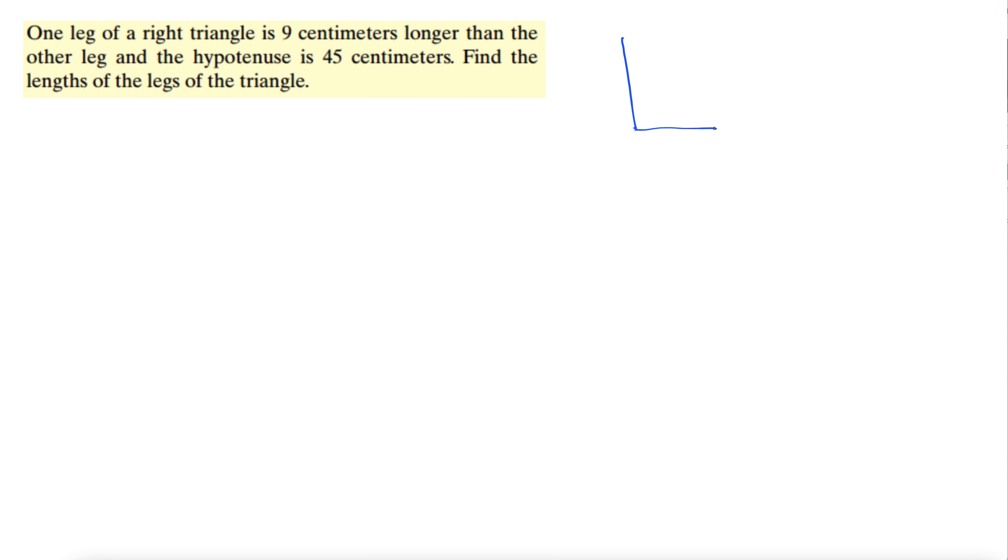Well, it tells us for any right triangle, a, b, and c, that a squared plus b squared equals c squared, right? And c has to be the hypotenuse. You can switch a and b.